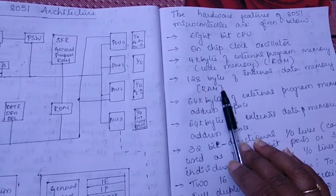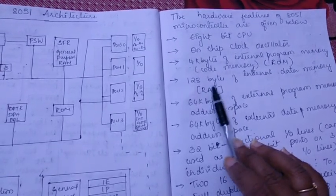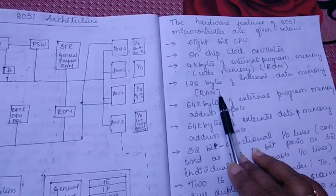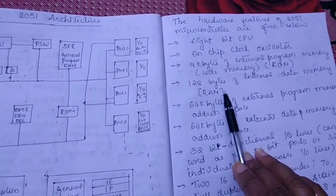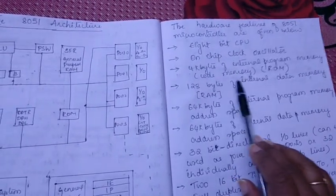Next is space where internal data memory is stored, that is 128 bytes, or simply you can call it as RAM or data memory. ROM you call it as code memory.